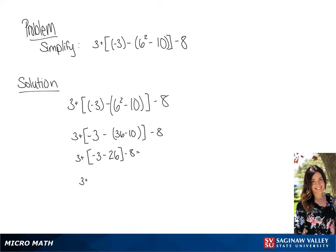So we're going to have 3 plus negative 29 minus 8. So this gives us 3 minus 29 minus 8. And now that the brackets are gone, we can solve and we get negative 34 as our answer.